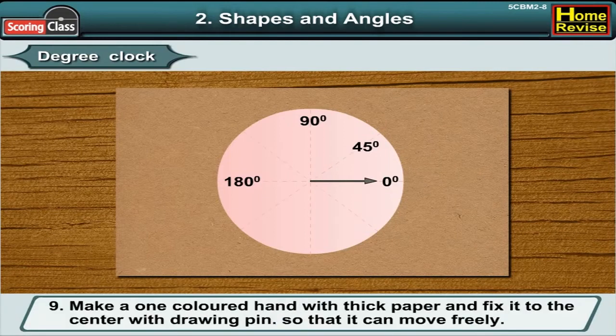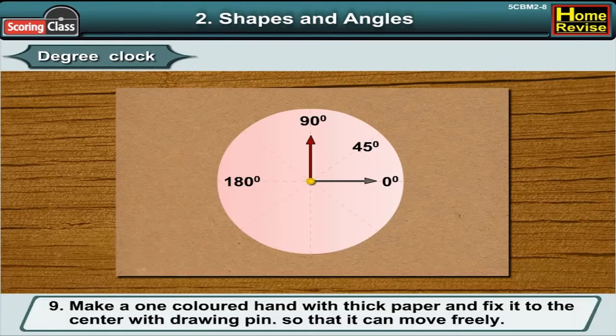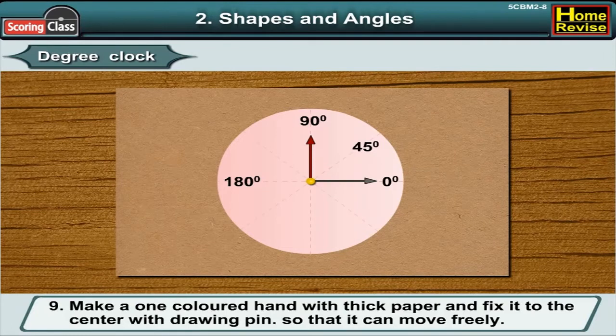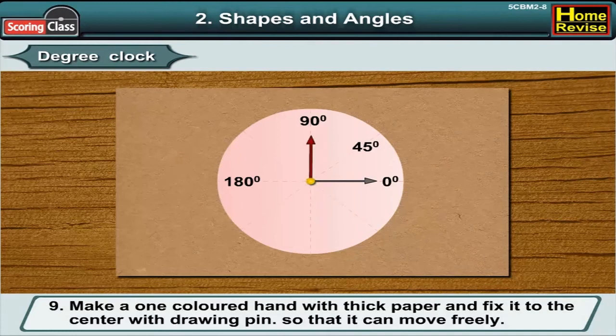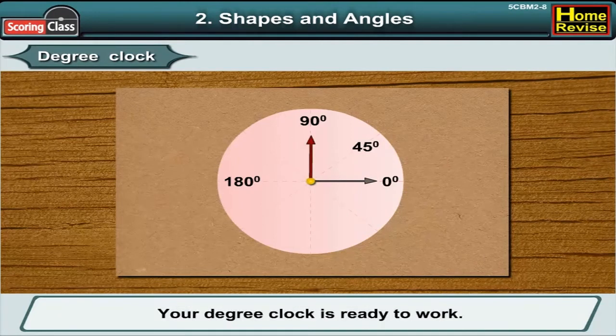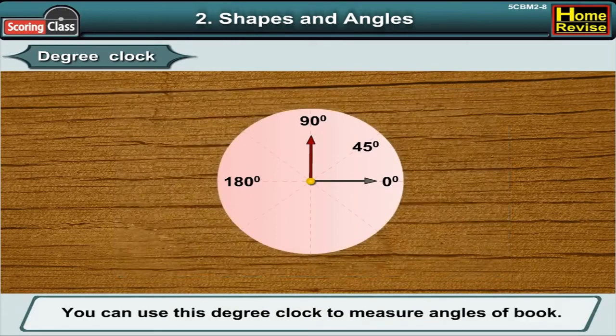The ninth step: Make a colored hand with thick paper and fix it to the center with a drawing pin so that it can move freely. Your degree clock is ready to work. You can use this degree clock to measure angles.